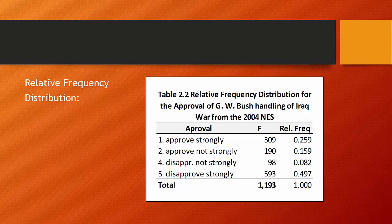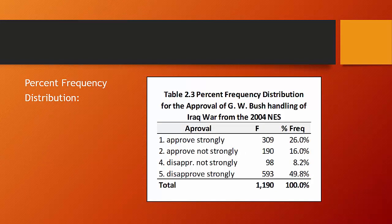Probably more commonly used, however, is a percent frequency distribution. And here we have it again for the approval of George W. Bush and his handling of the war in Iraq. And the 309 observations we had,